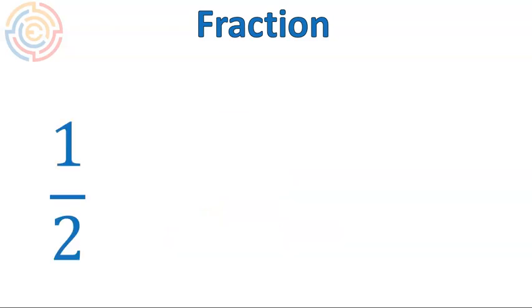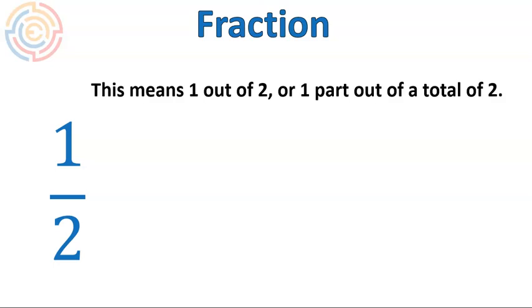What a fraction looks like, if we take this fraction of one half, it means one out of two, or one part out of a total of two. In a visual way, it would look like this: one shaded section out of two sections. So one of them is that kind of orange-yellow color. That is one out of the two.